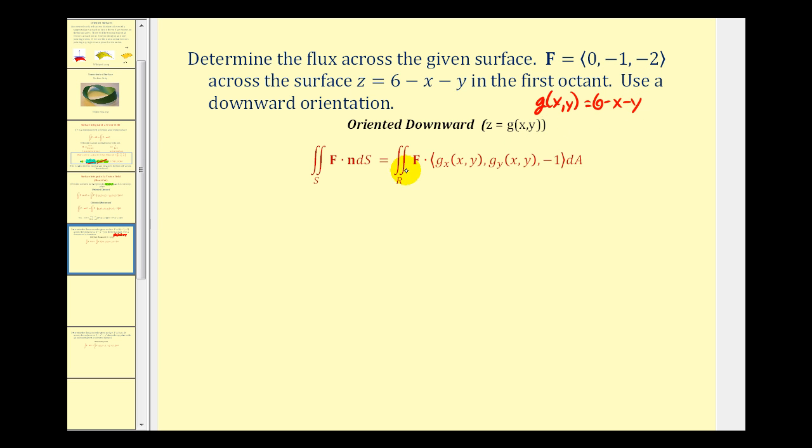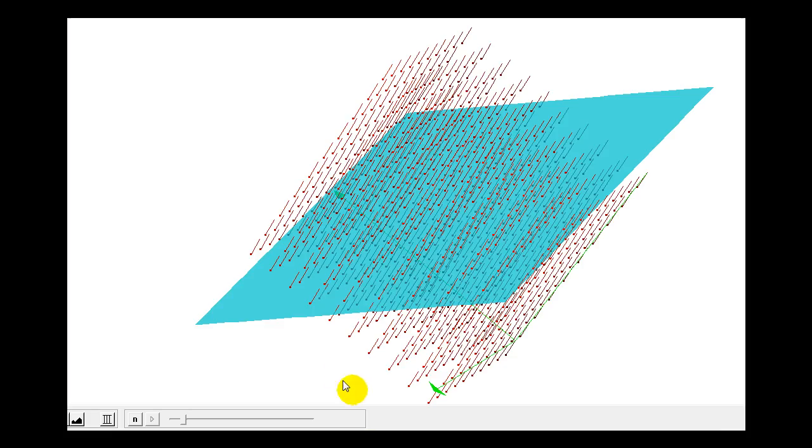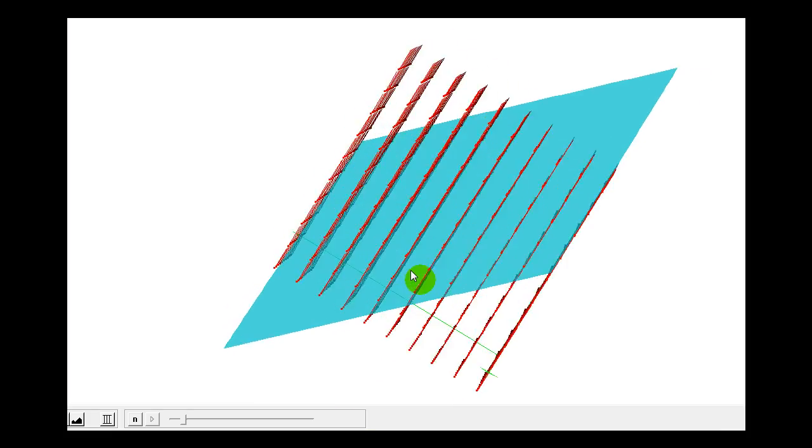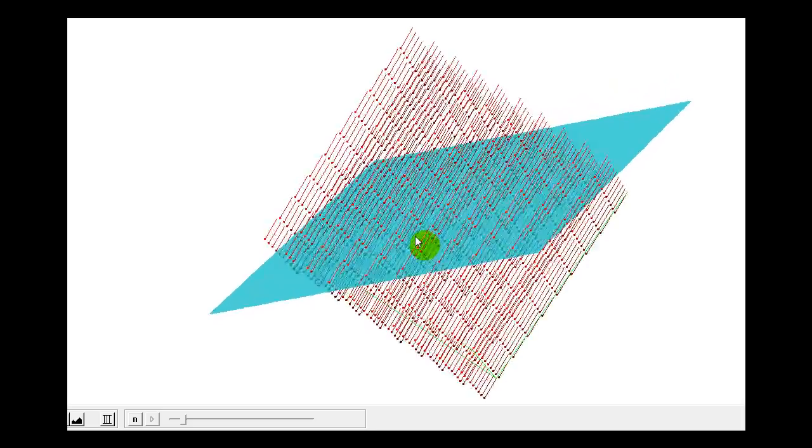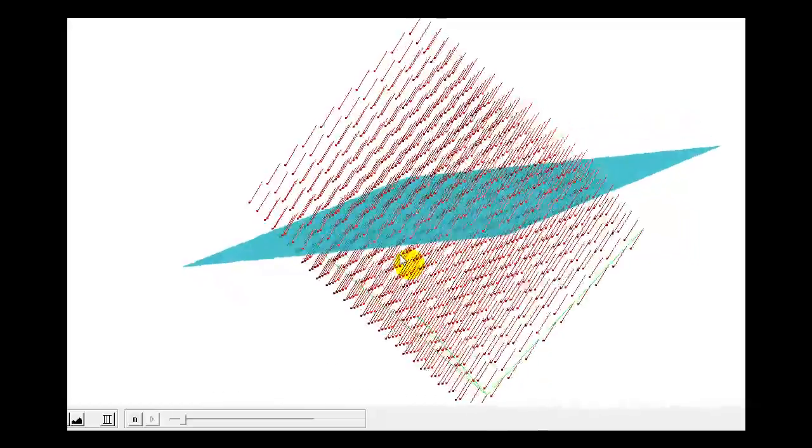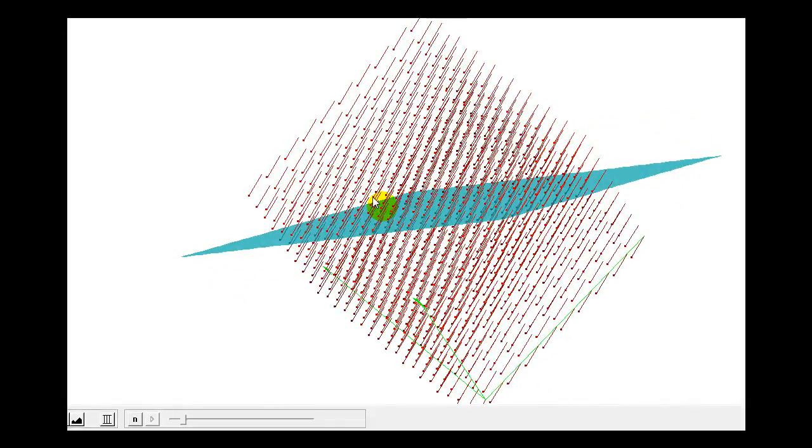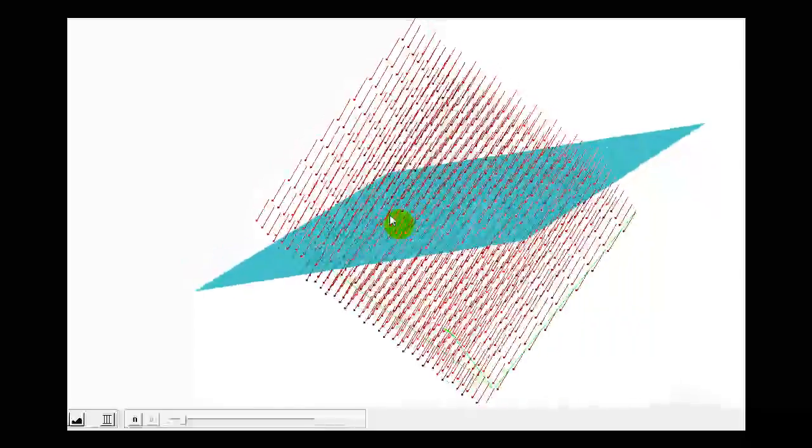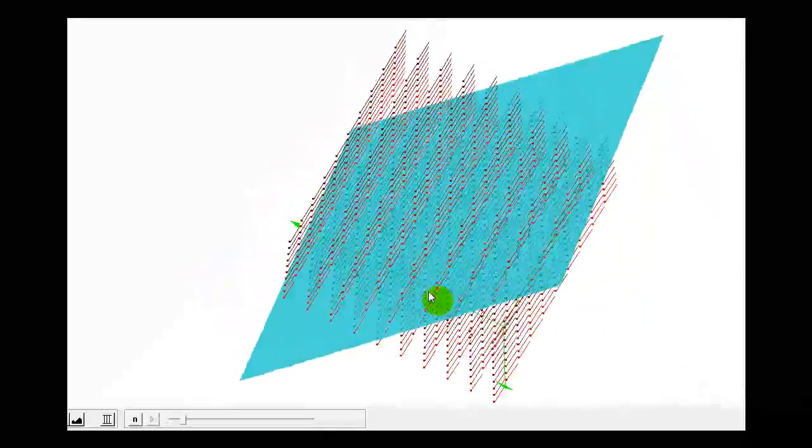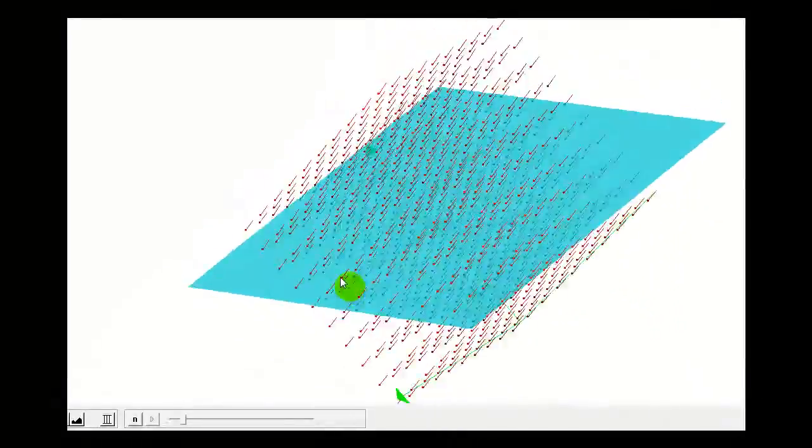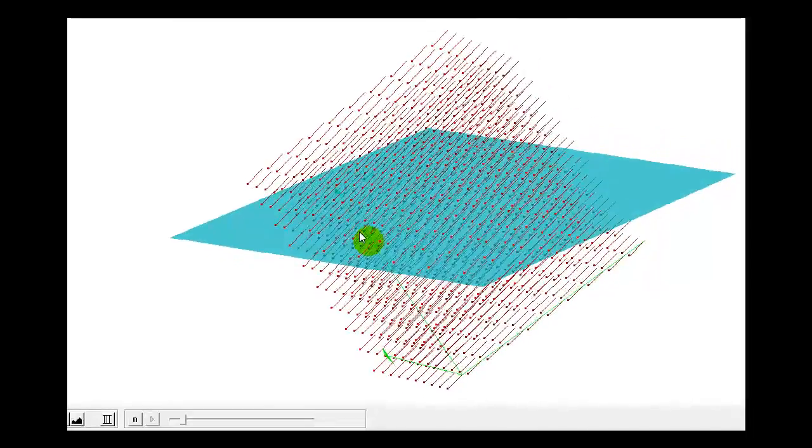Now before we set this up, let's take a look at this graphically. You could think of the vector field as representing a rain storm and you could think of the surface as the roof of a building. So the surface integral would represent the flow rate of the rain on the roof.